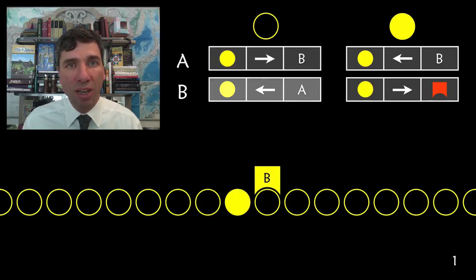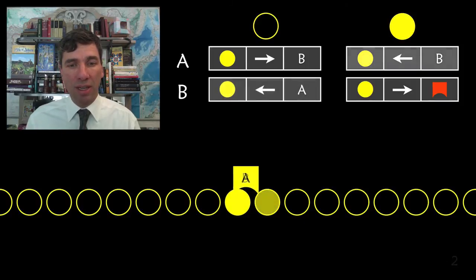Now which state are we in? We're in state B and we are at an empty circle. So what are the rules that we need to follow now? We need to first of all replace our empty circle with the full circle. We need to move left and we need to replace our state with A. There we go.